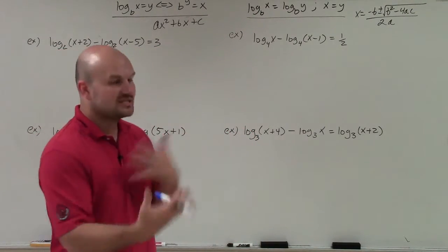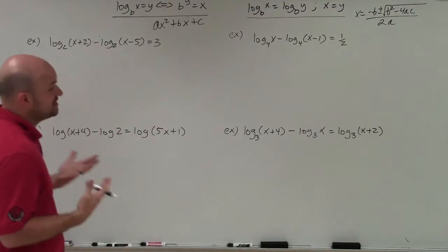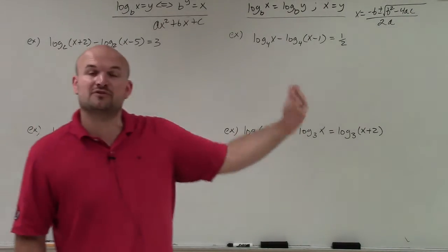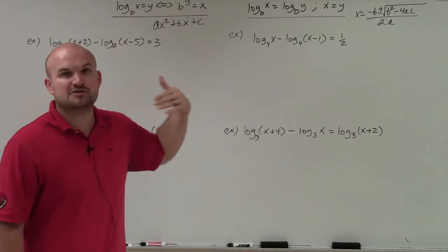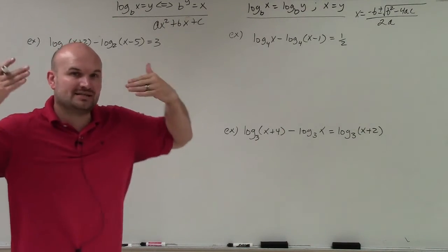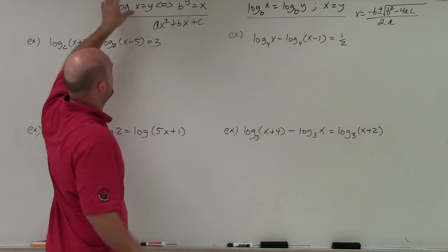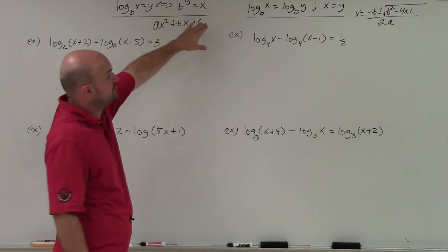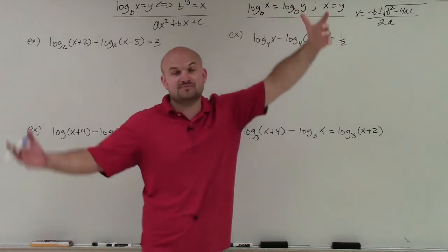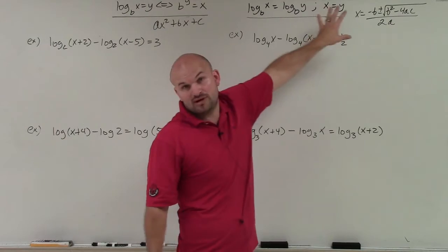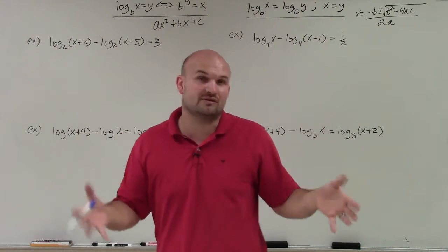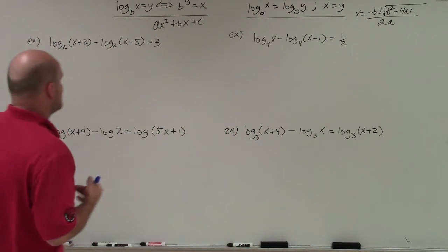But again, these problems are just like the ones we just did. The only thing is we're just instead of using the product property for the logarithms, we're now going to use the quotient property. And again, our objective is the same. We're either going to want to get one logarithm all by itself, so therefore we can convert it to exponential form, or we're going to get logarithms isolated on both sides so we can use the one-to-one property. And we're going to use both of those solving techniques in this video.